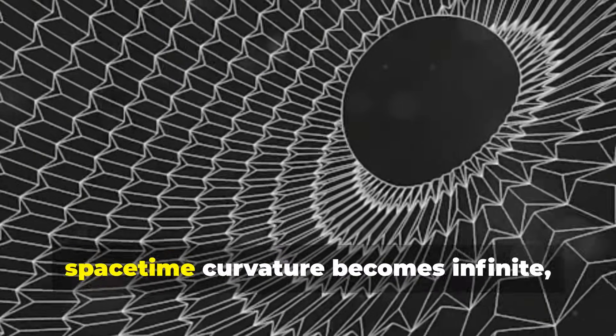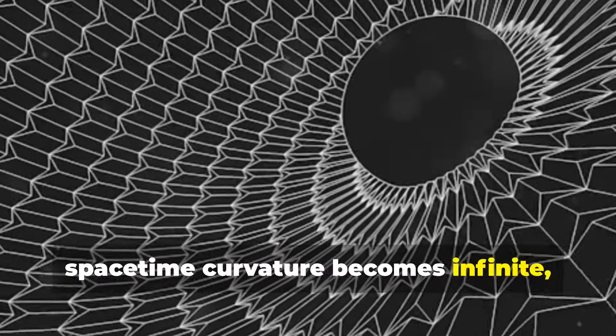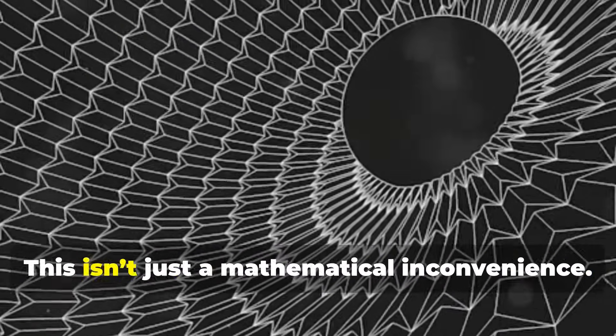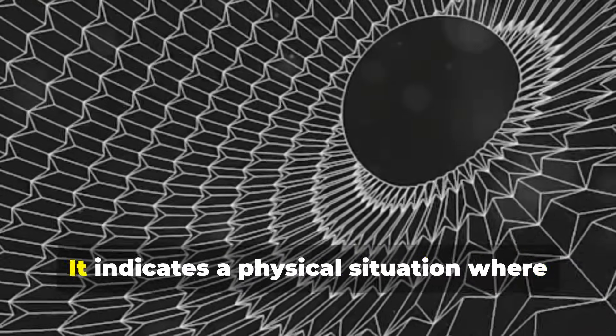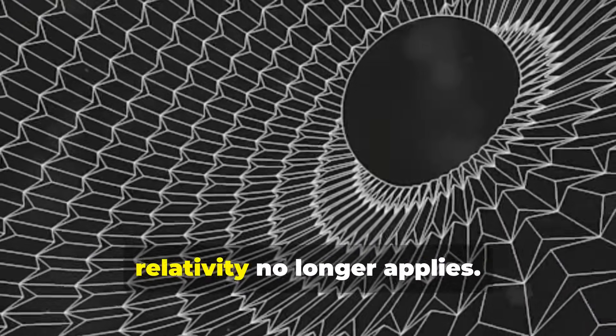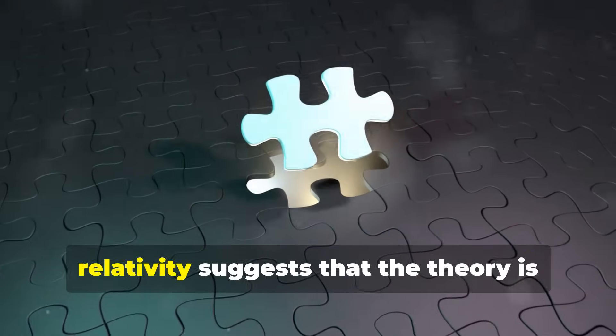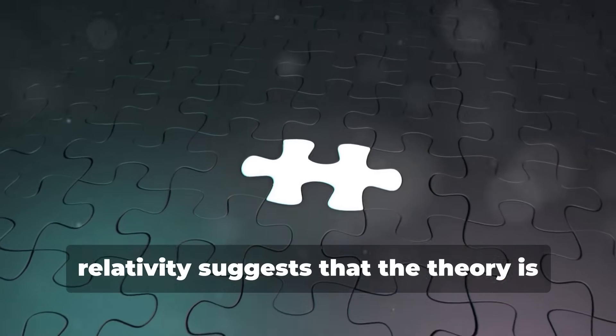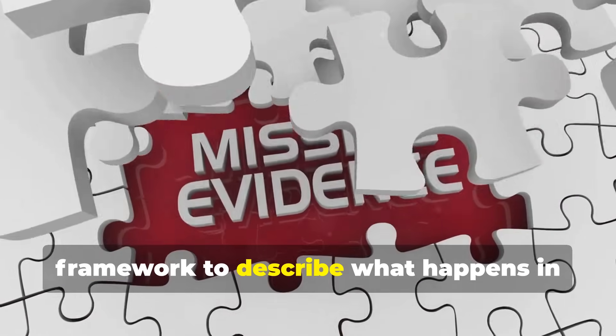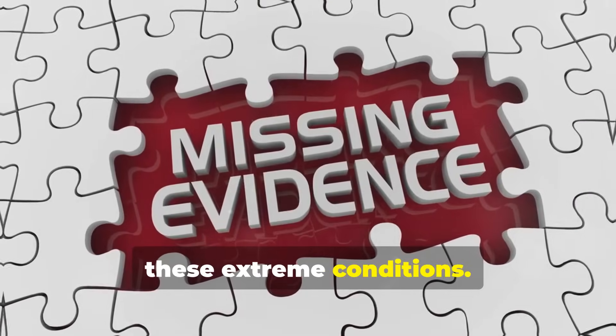At a singularity, space-time curvature becomes infinite and the known laws of physics break down. This isn't just a mathematical inconvenience. It indicates a physical situation where relativity no longer applies. The fact that singularities exist within relativity suggests that the theory is incomplete and that we need a new framework to describe what happens in these extreme conditions.